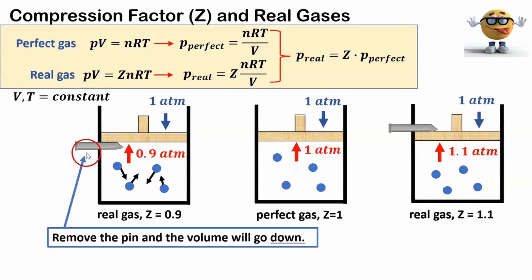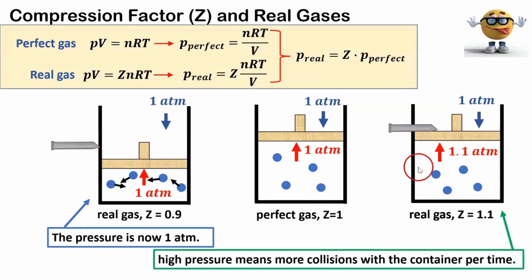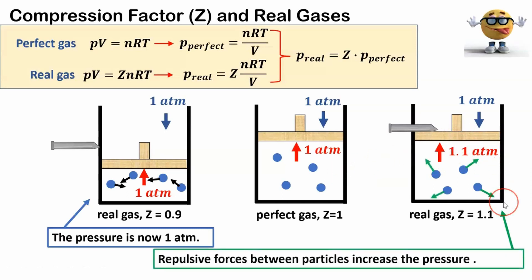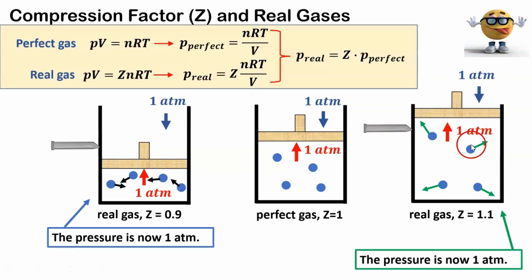If we remove the pin, the volume is going to go down so that the pressure increases until we achieve the same pressure as the outside — 1 ATM, the same as the perfect gas — and we're in equilibrium again. In the case where Z is greater than 1, there's greater pressure, meaning more collisions with the container compared to a perfect gas. There are more collisions because repulsive forces are dominant, causing particles to repel each other and collide with the container more often. If we remove the pin in this case, the volume is going to go up until the two pressures are equal, and as it goes up, the pressure goes down.